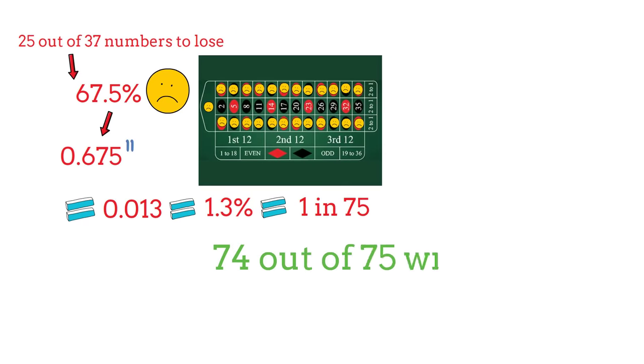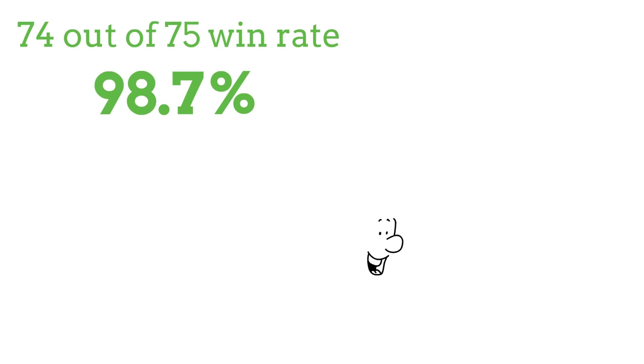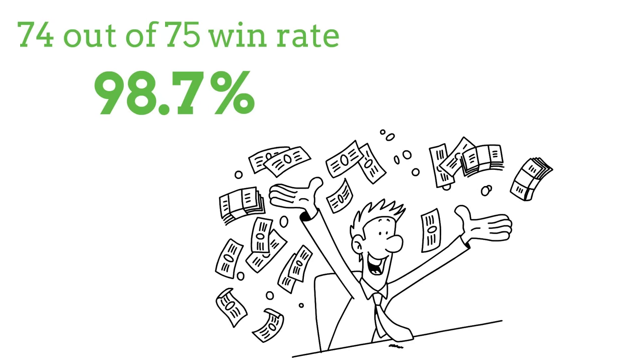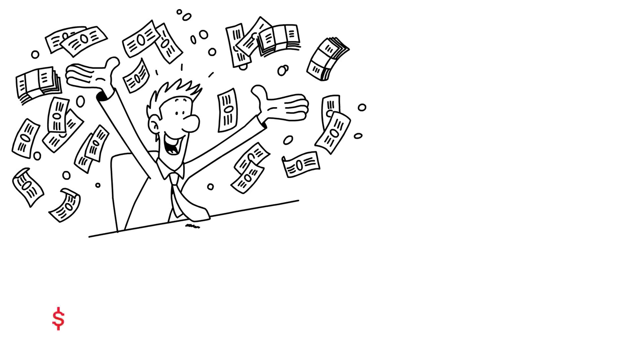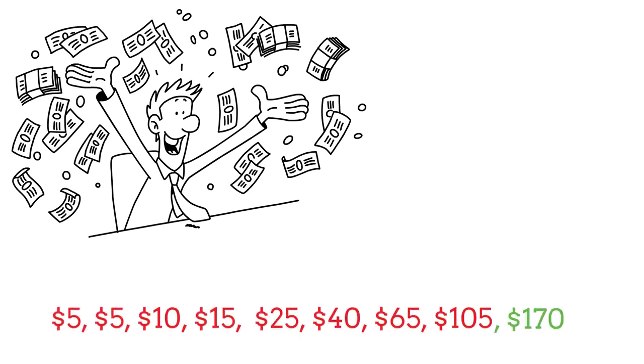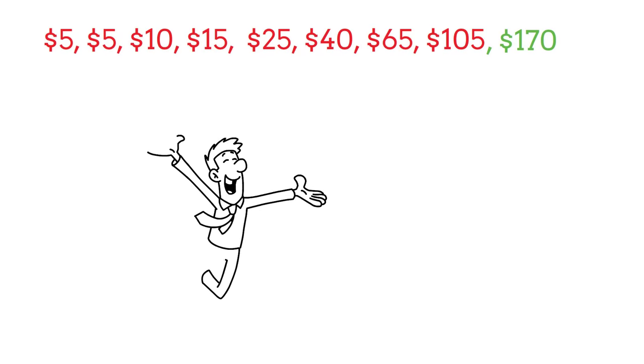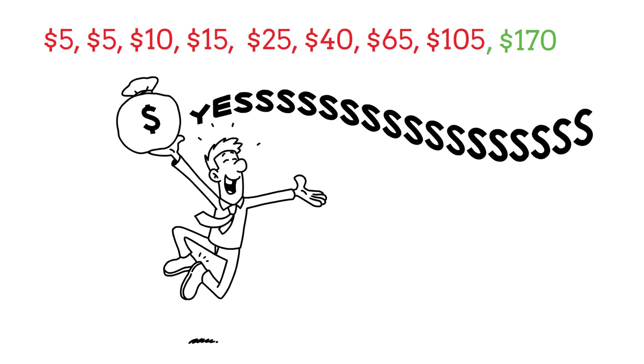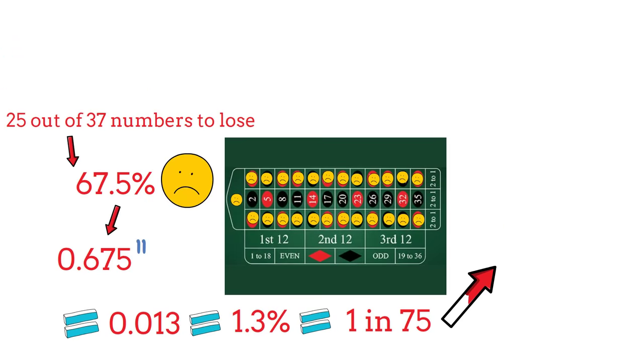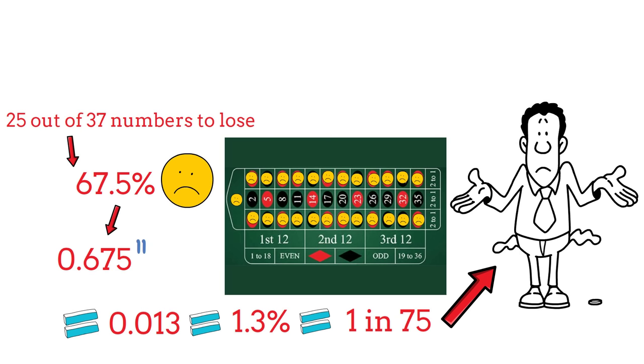74 out of 75 times, or in other words 98.7% of the time, we are going to make money each time we attempt this betting sequence. And the further we get down the sequence, the more money we're going to make when a winning number lands. Now the obvious downfall to this strategy is that 1 in 75 times we could lose our entire bankroll. For some players, a 1.3% chance of losing over a thousand dollars is still too risky.